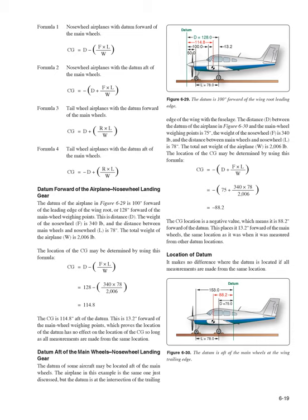Datum Aft of Main Wheels (Nose Wheel Landing Gear): Using the same airplane with datum at the trailing edge-fuselage intersection, D = 75 inches aft of main wheels. CG = −75 + (340×78/2006) = −88.2 inches. The negative value means the CG is 88.2 inches forward of the datum, placing it 13.2 inches forward of main wheels—the same location as before. Datum Forward of Main Wheels (Tail Wheel): For Figure 6-31, D = 7.5 inches, R = 67 lb, L = 222 inches, W = 1,218 lb. CG = 7.5 + (67×222/1218) = 19.7 inches behind the datum.